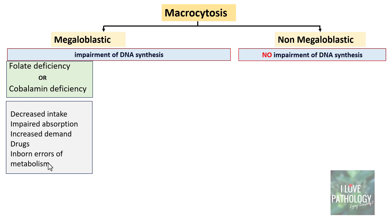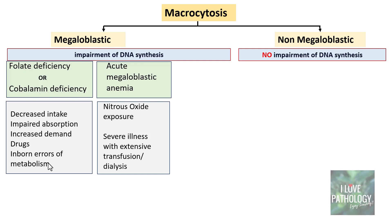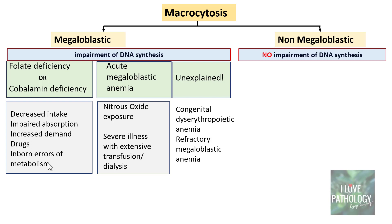A second important entity is acute megaloblastic anemia, seen in scenarios like nitrous oxide exposure, severe illness with extensive transfusion, or dialysis, causing acute deficiency of folate or cobalamin — developing within days to a few weeks. A third category includes megaloblastic macrocytosis without a clear explanation, such as congenital dyserythropoietic anemia or refractory megaloblastic anemia. The most common cause overall remains folate or cobalamin deficiency.